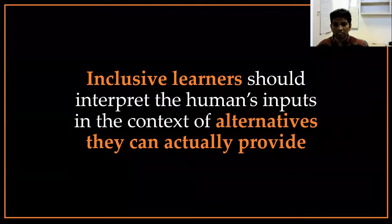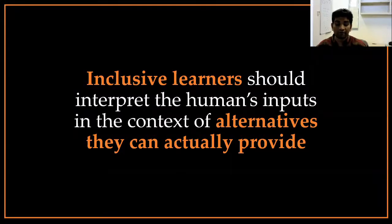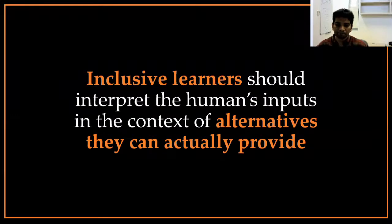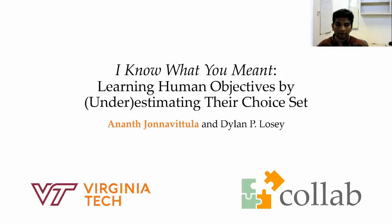Overall, as robots become ubiquitous in the world, they will encounter users that are not experts. So we need robots to be inclusive learners to ensure that they can learn from these non-expert users and their demonstrations. We found that this can be achieved by having robots that interpret the user's inputs in the context of alternatives that the user can actually provide, instead of assuming that every user is a perfect user. Thank you.